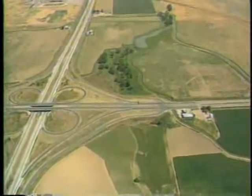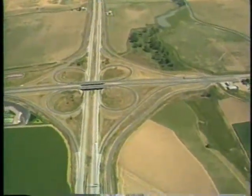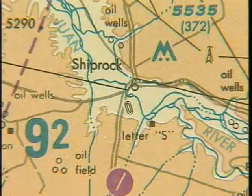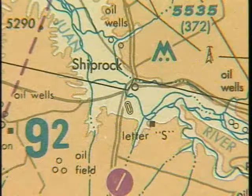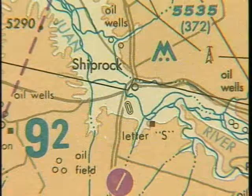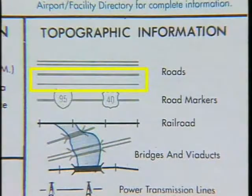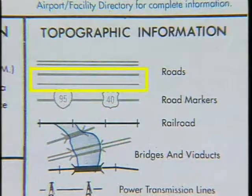In addition to towers, roads and highways make good landmarks for navigation. They are indicated by solid gray lines; divided highways are shown by double lines. Primary and secondary roads are illustrated by single gray lines, with primary road lines slightly thicker than those for secondary roads.